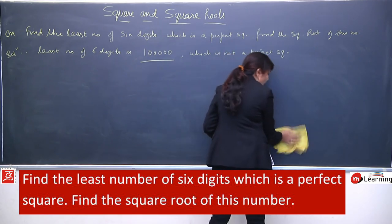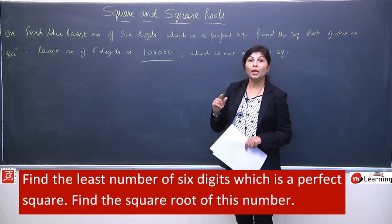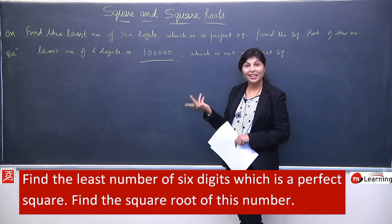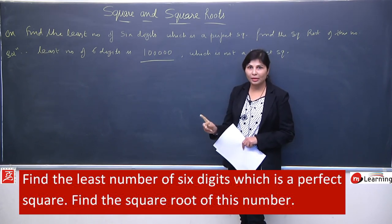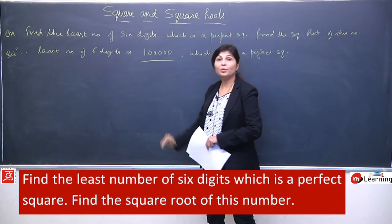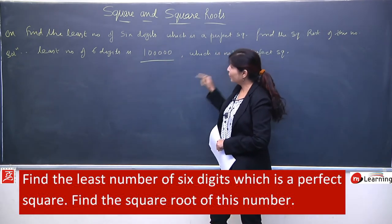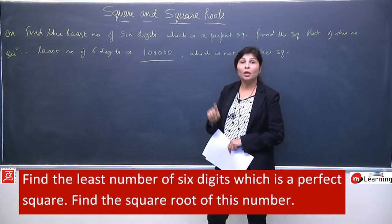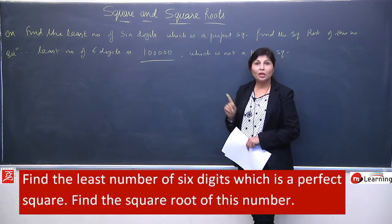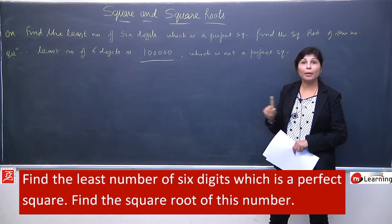Ab yeh perfect square nahi hai, but yeh six digit ka sabse chota number hai. Is question mein decide karna hai: least number subtract karein ya add karein. Agar subtracted wala pattern lagayenge toh yeh five digit mein convert ho jayega. Agar added wala lagayenge tab hi yeh six digit mein maintain rahega. Toh humne decide kar liya: what least number must be added, so that you will get a perfect square.